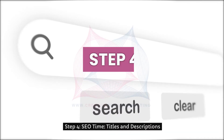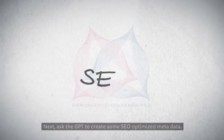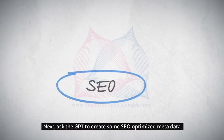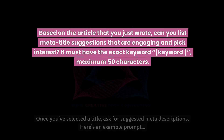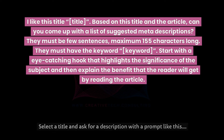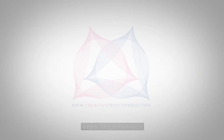Step 4: SEO Time — Titles and Descriptions. Next, ask the GPT to create some SEO-optimized metadata. Here's an example prompt. Once you've selected a title, ask for suggested meta descriptions. Select a title and ask for a description with a prompt like this.